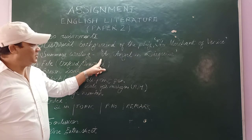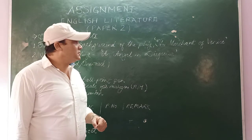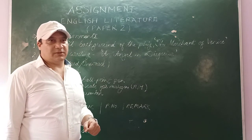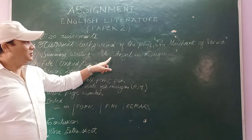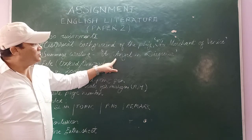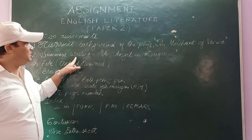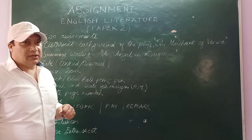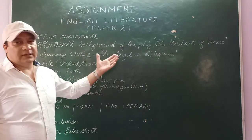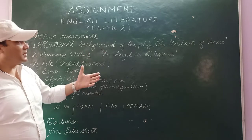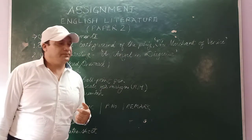Assignment number two is summary writing from the prose — the story An Angel in Disguise. This is a beautiful story in your prescribed syllabus, written by T.S. Arthur. So we'll write a summary writing on this story. If you write the background of the play The Merchant of Venice and then the summary writing on An Angel in Disguise, you will understand both of these in a detailed way.